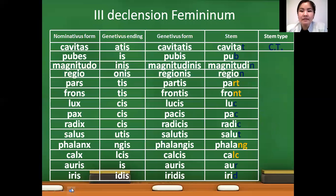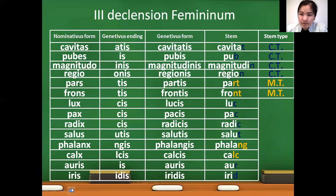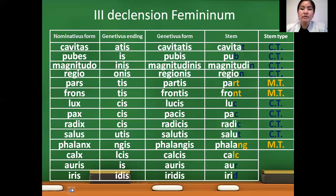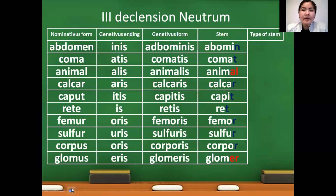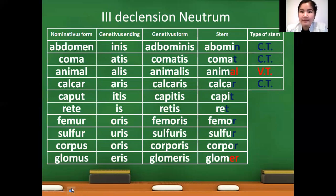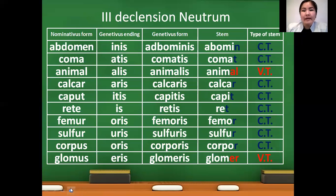In feminine nouns: cavitat, pub, magnitudin, and region are consonant type stems. Part and front are mixed type stems because they end with two consonants. Luc, pac, radic, and salut are consonant type stems. Phalanx and calc are mixed type. Aur and irid are consonant type stems. In the case of neuter nouns: abdomen and comat are consonant type. Animal ending in -l is vowel type. Calcar, capit, ret, femur, sulfur, and corpus are consonant type. And glomer ending in r is vowel type stem.